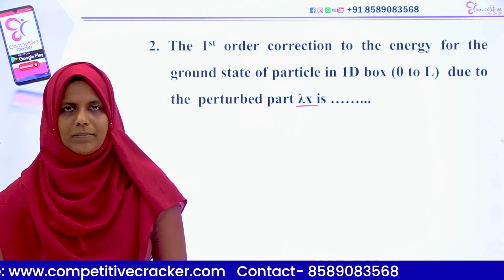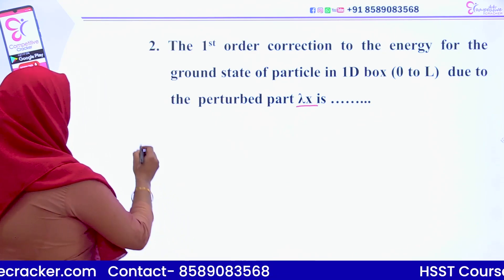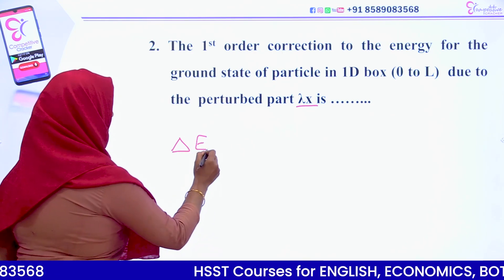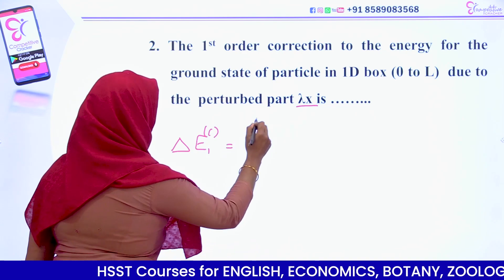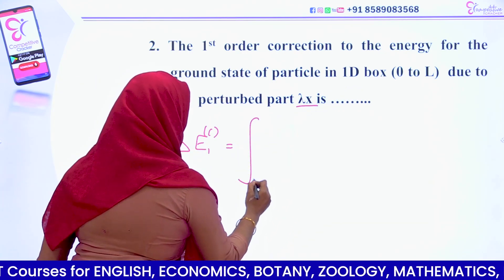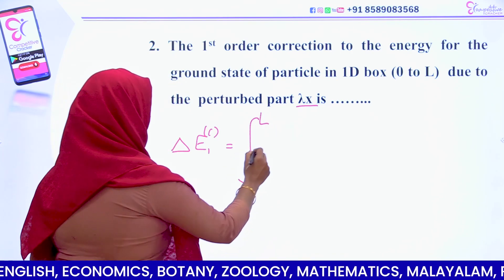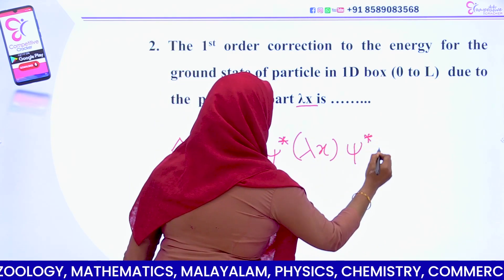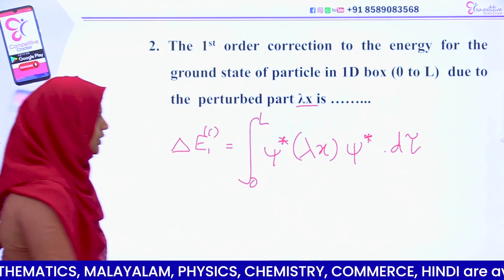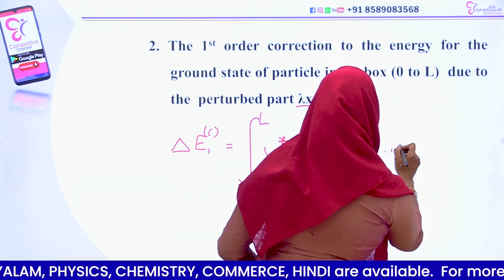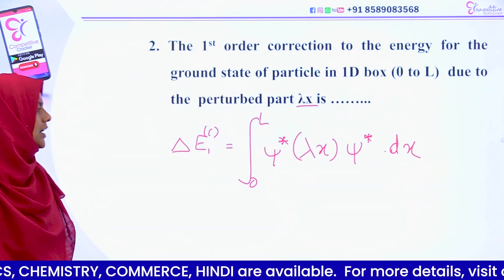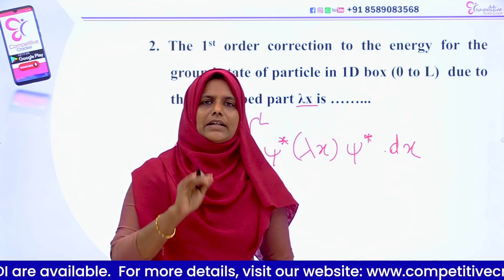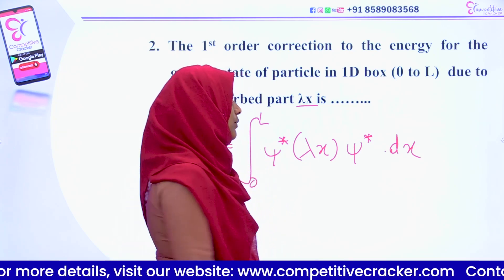Now for perturbation theory: the first order correction due to the perturbation lambda x is delta E₁. The first order correction is equal to the integral from zero to L of psi-star times the perturbation lambda x times psi dx. This is a particle in one-dimensional box, so we use the general normalized wave function.